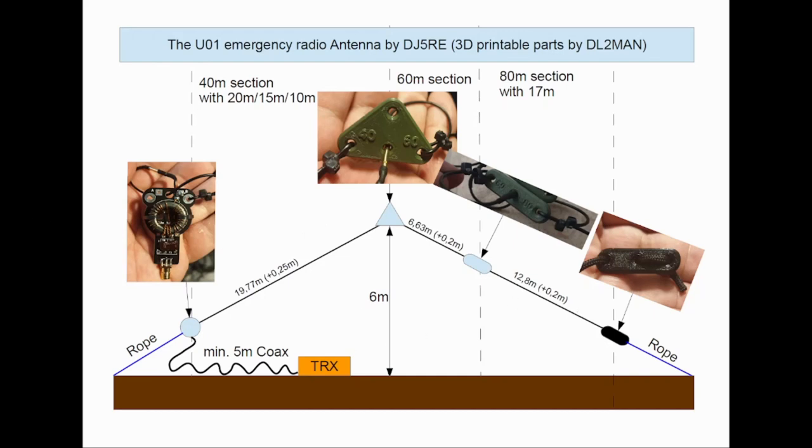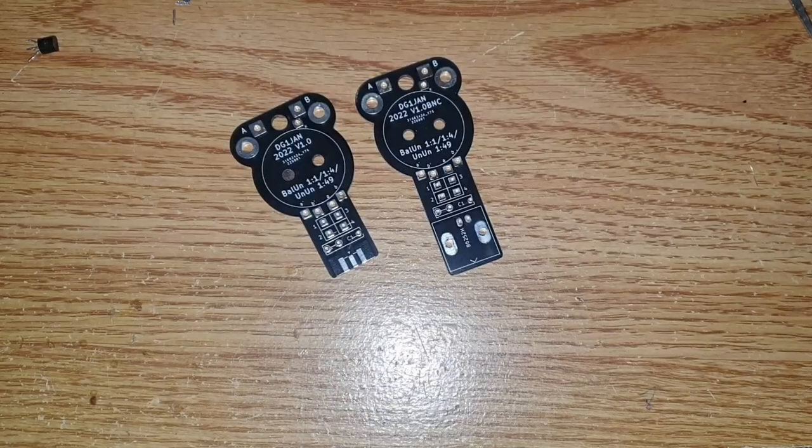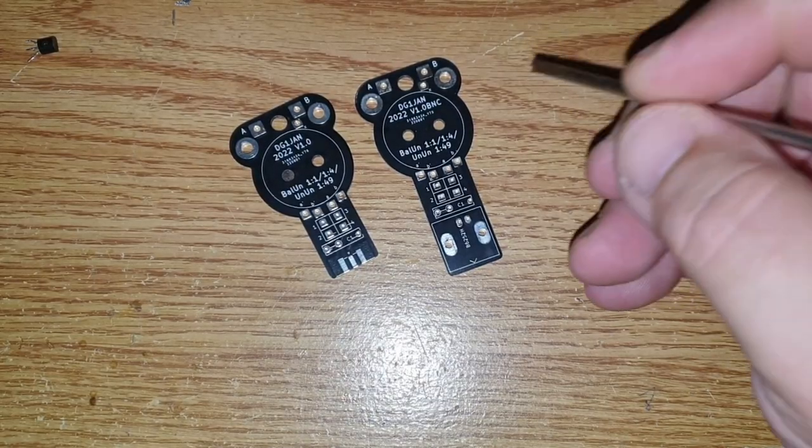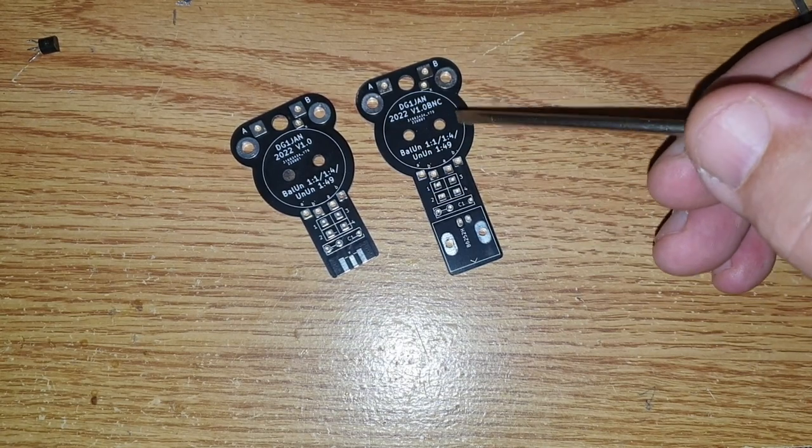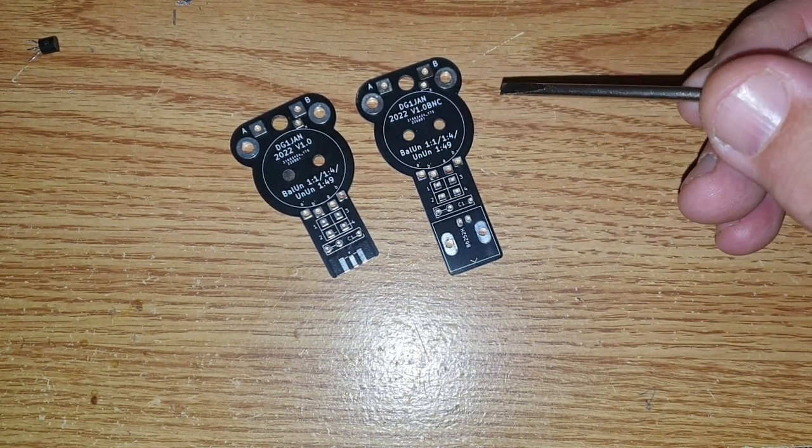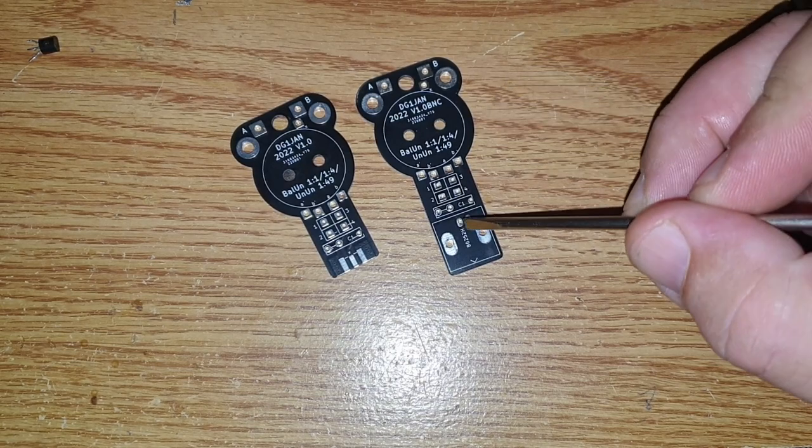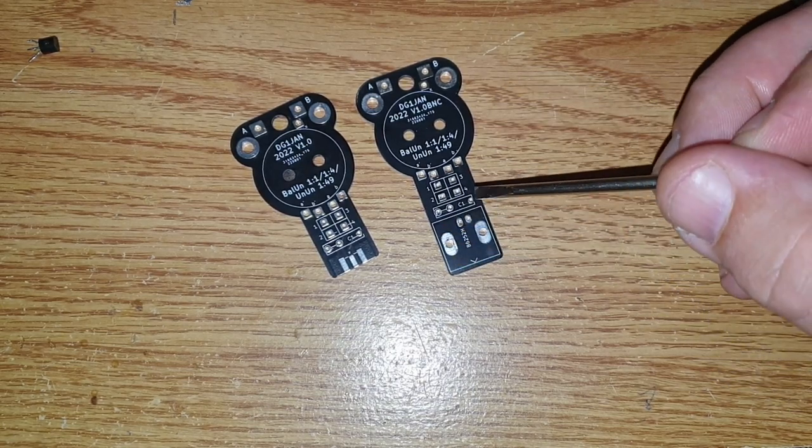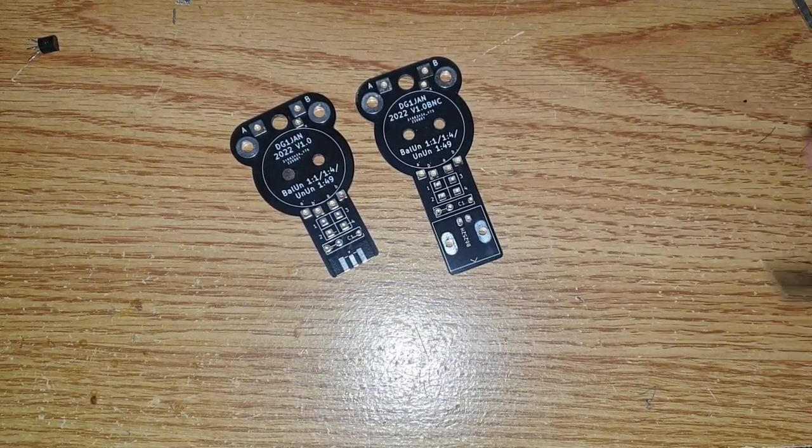Okay, so now I'm going to walk you through the materials we are going to use. Let's start with the PCBs. Those are the PCBs by DeltaGolf1, Juliet Alpha November. You can simply upload the files and order them from JLCPCB. This is the BNC version. This is the SMA version.